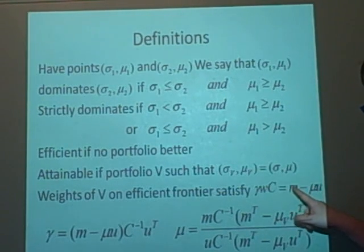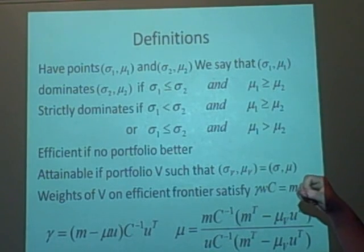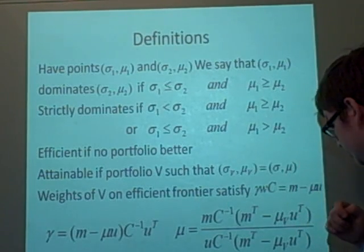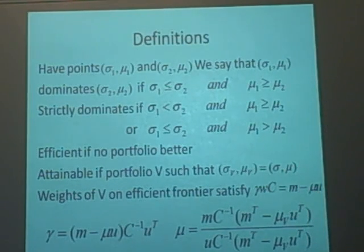is equal to m minus mu times u. And the m is the vector of expected return. And this is in, I think, the last finance video. And u is the unit vector and the covariance matrix. Well, that's in the last video as well. I suggest checking that if you know what they are.